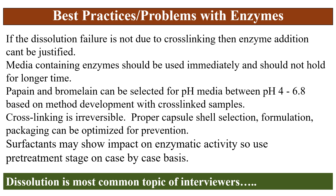Crosslinking is an irreversible and variable process — every time you cannot get the same degree of crosslinking. Therefore, proper capsule shell selection, formulation, excipient selection, manufacturing method selection, and packaging can be optimized for prevention. Some gelatin manufacturers claim that treated gelatins — such as succinated gelatin or fish gelatin — are less prone to crosslinking. These can be tried. Also, HPMC capsules can be tried so that there will be no crosslinking, depending on the type of formulation and requirements.